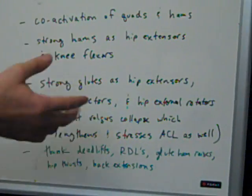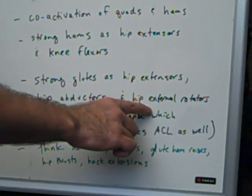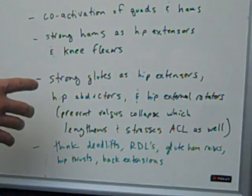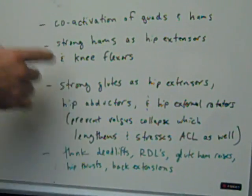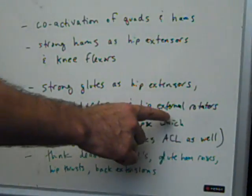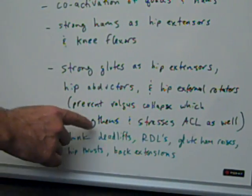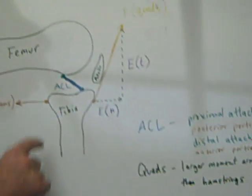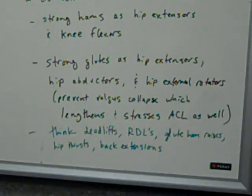And you want strong glutes. And the glutes have three primary roles: hip extensors, hip abductors, and hip external rotators. And the reason why strong glutes are important is not just to help out as hip extensors, but also the abduction and external rotation strength prevents valgus collapse. And valgus collapse can actually lengthen the ACL as well and stress the ACL.